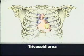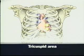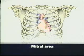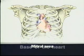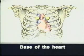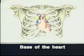The tricuspid area is in the left fourth and fifth interspaces, and the mitral area is at the apical impulse. The aortic and pulmonic areas together are sometimes called the base of the heart.